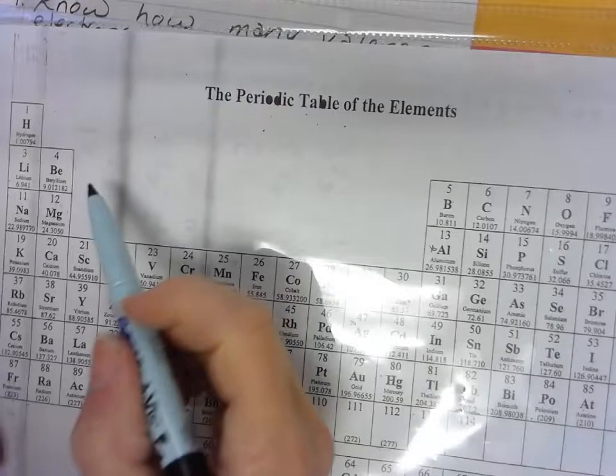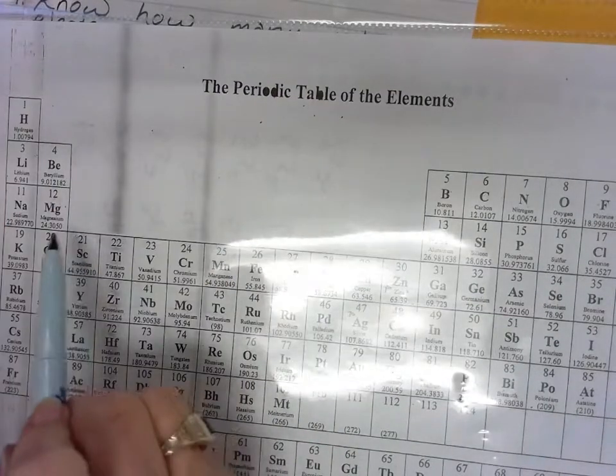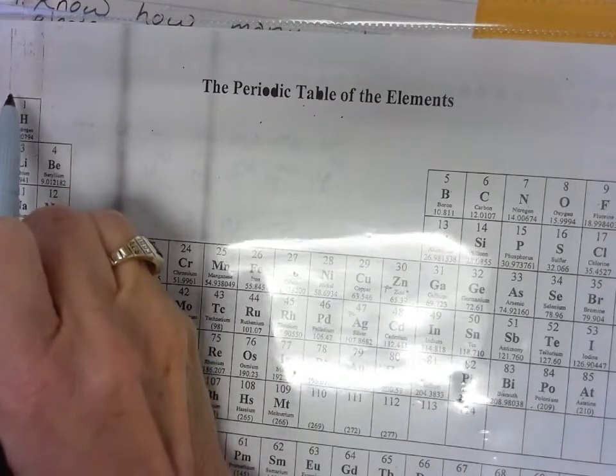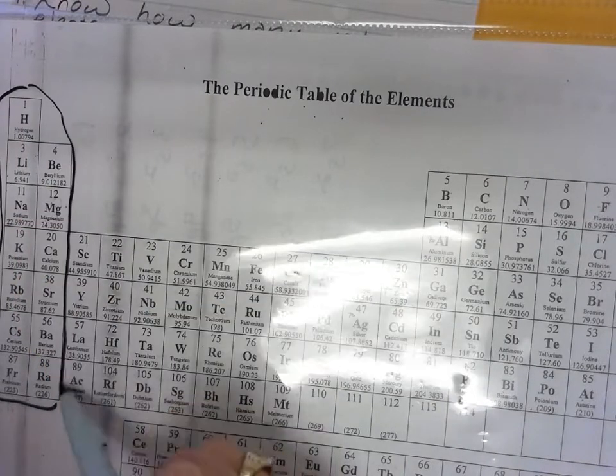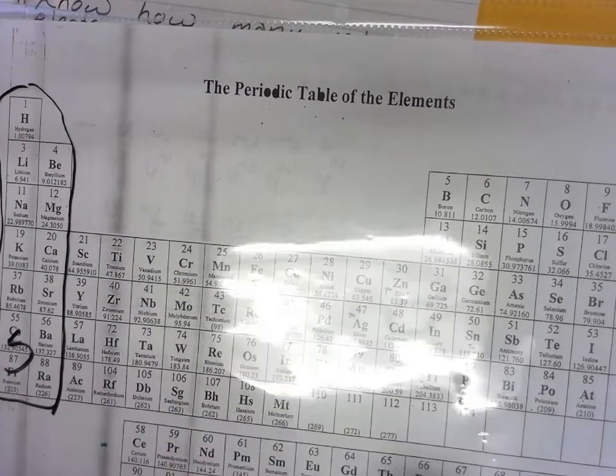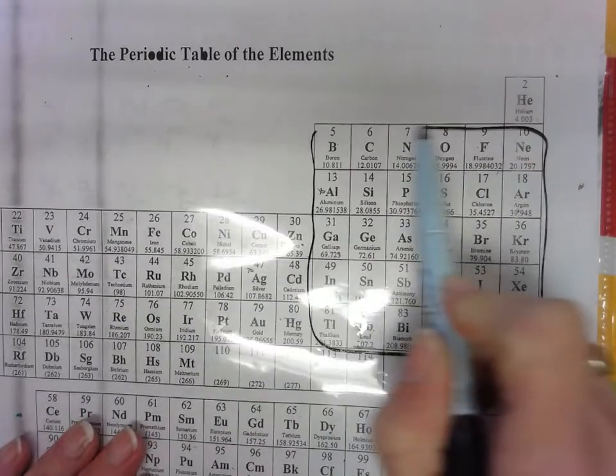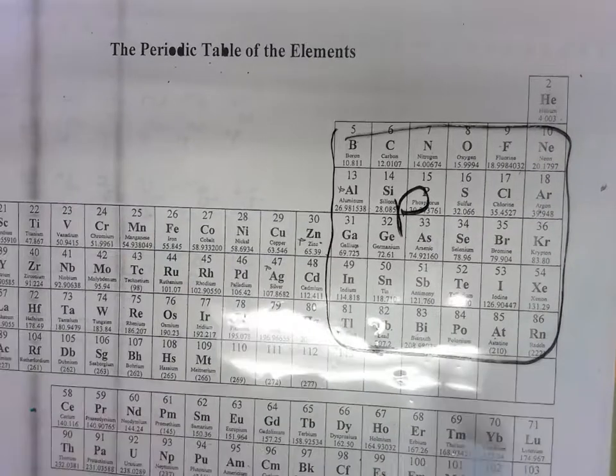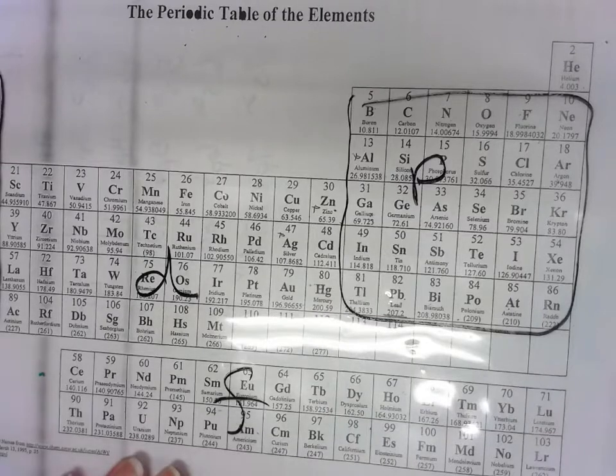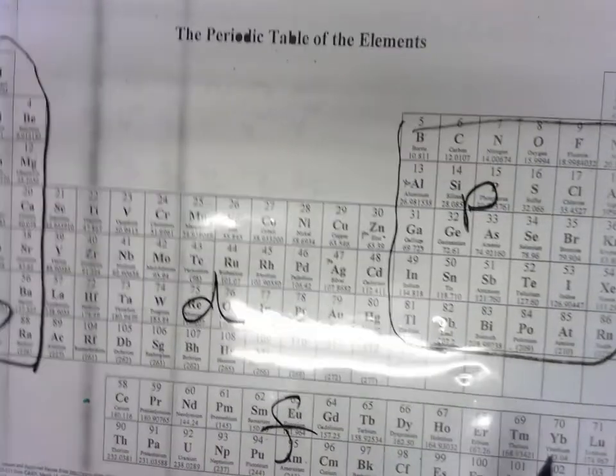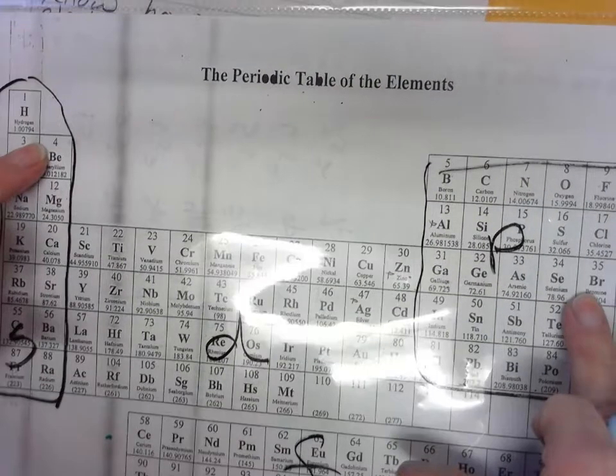Now, to determine the number of valence electrons, we're only going to look at the S block right now, which is here. This is your S block. Over here is your P block. This is your D block. And this is your F block. So what we're looking at right now is just knowing how many valence electrons the S and P, or our main block elements, have.